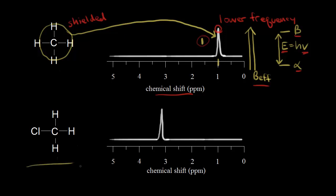Let's look at chloromethane next. For chloromethane, we have three equivalent protons, so one signal on our NMR spectrum. This signal occurs just past three, so approximately 3.1 parts per million.